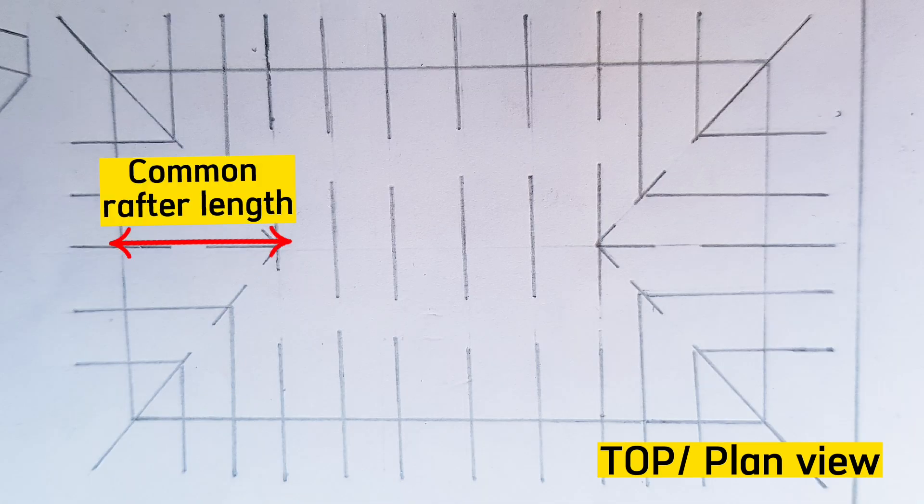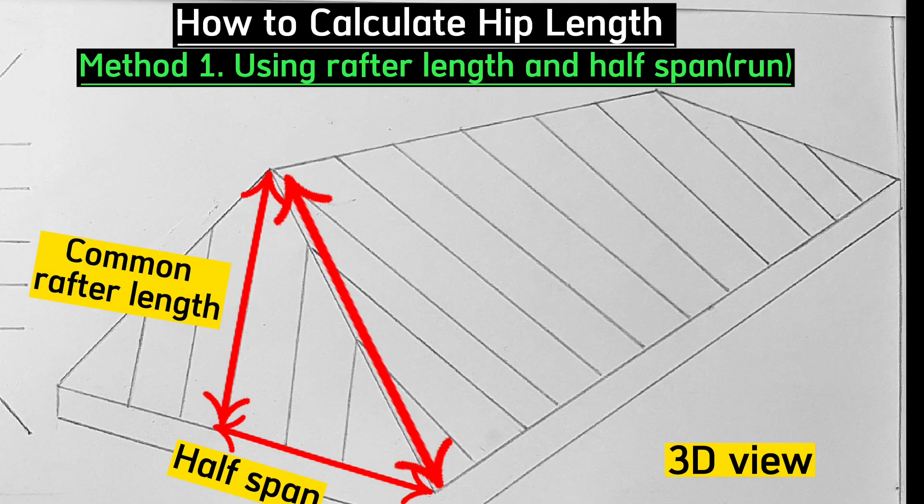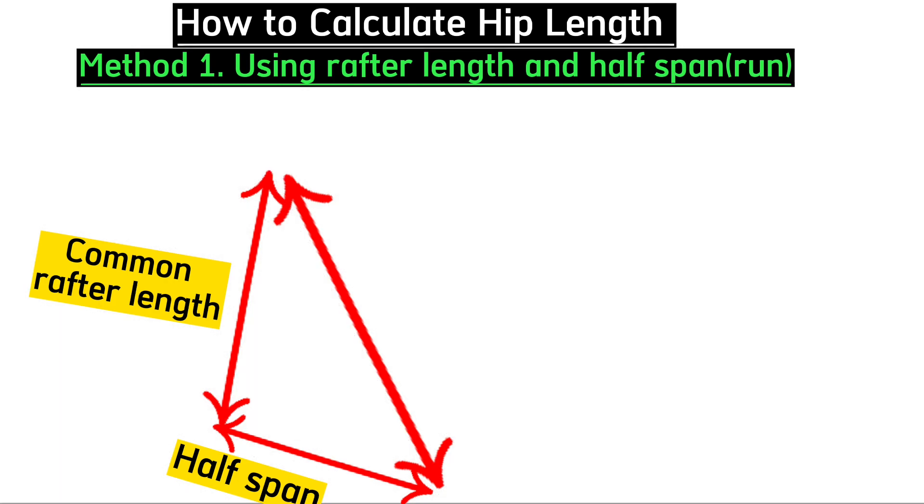This is the common rafter length, this is the half span, and the third side is the required hip length.